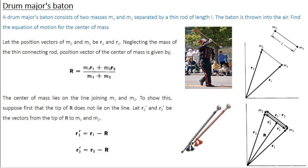The idea is to reduce a multi-particle system into a single particle system. The advantage: instead of dealing with n equations of motion, you only need a single equation — the equation of motion of the center of mass. When you solve that, you get an idea about the overall motion of the system.